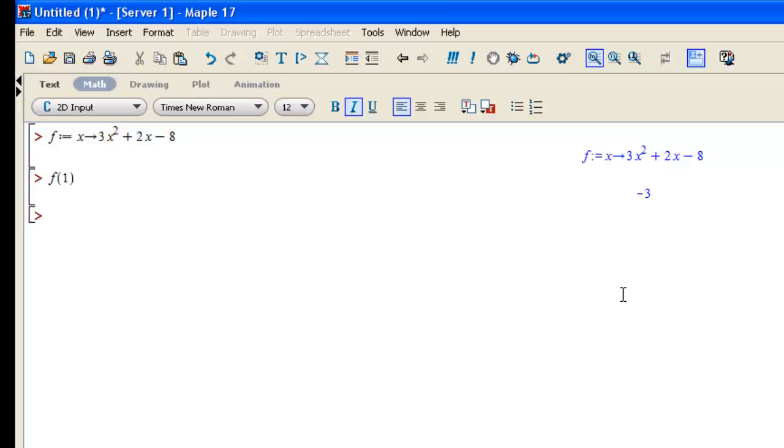You can evaluate more complicated expressions involving the function f. I could, for example, type f of negative 5 minus 4 times f of 1 squared. And it will evaluate that to 21.